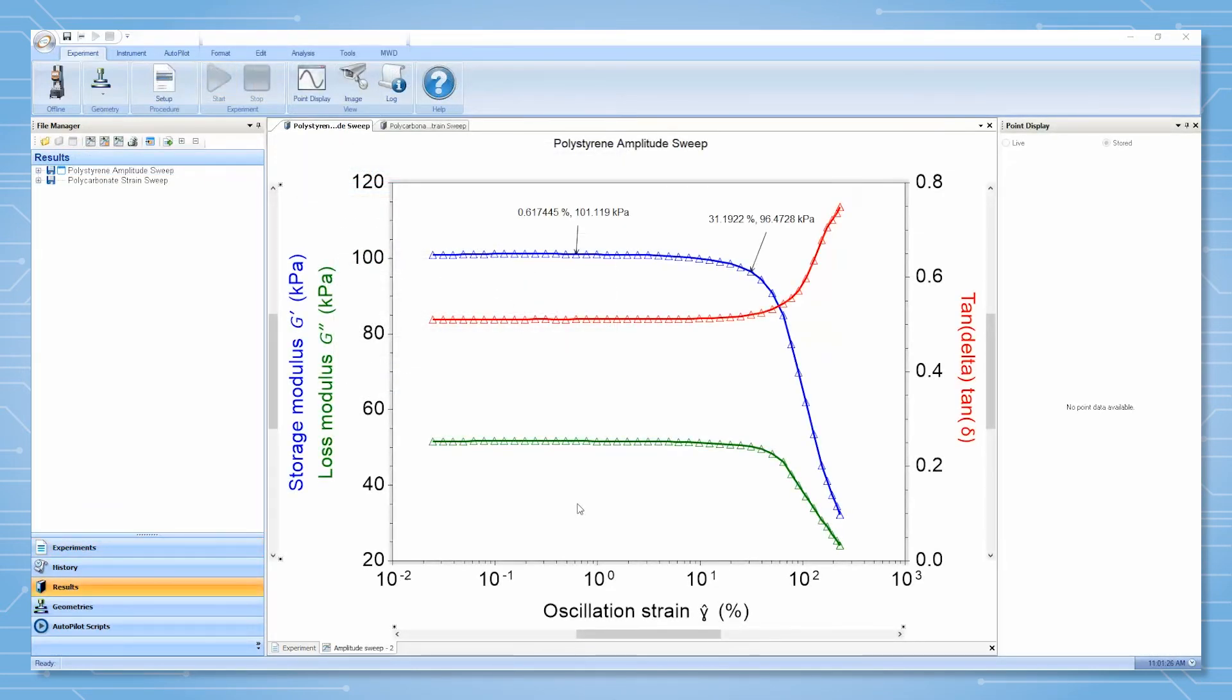The data from the sweep should be plotted with the storage modulus versus strain, stress, or amplitude.